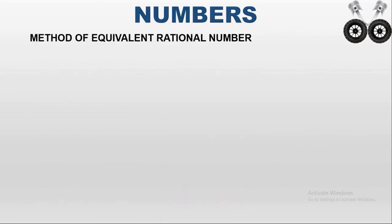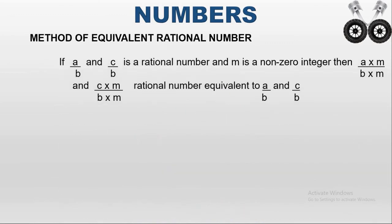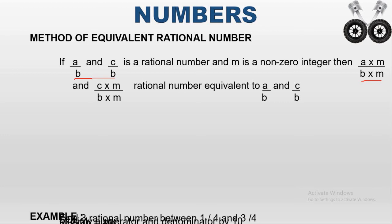The next method is the method of equivalent rational numbers. Here we are going to find the in-between rational numbers between two rational numbers using equivalent rational numbers. We are taking two like rational numbers — like rational numbers means the denominators have the same number. Here a/b and c/b are two like rational numbers. We multiply the numerator and denominator by the same integer, which is not equal to zero. Then you will get two equivalent rational numbers, and for those we write the in-between numbers.